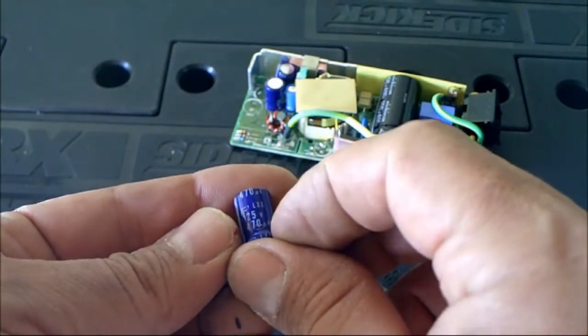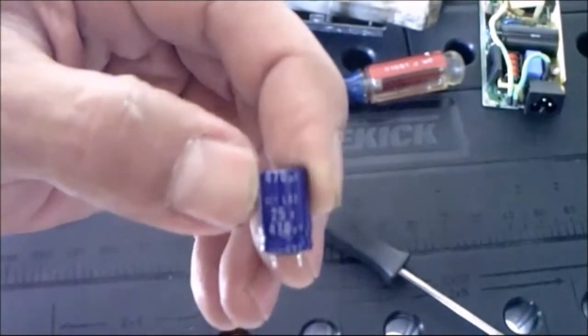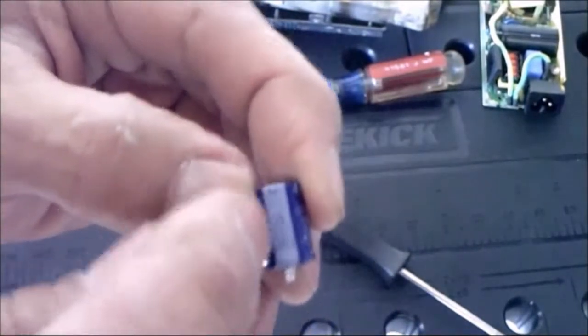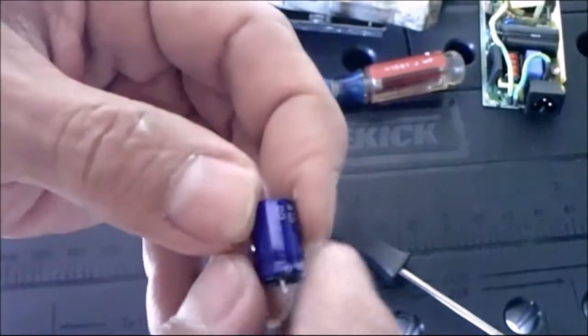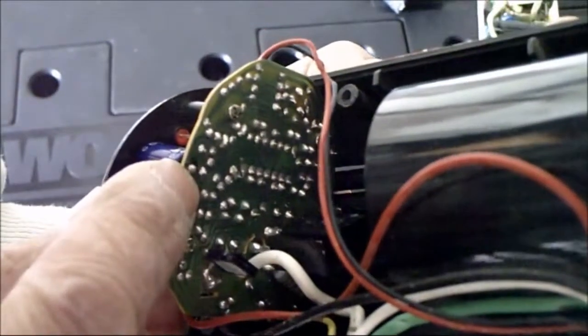Before you install this new capacitor you want to know the polarity on this capacitor. You can tell because there's a gray bar with negative signs on it. If you install this capacitor in reverse order it will explode. The positive side will be facing out, so this lead here will be positive. It's also marked on the circuit board as a plus, so it's pretty much fail-safe.